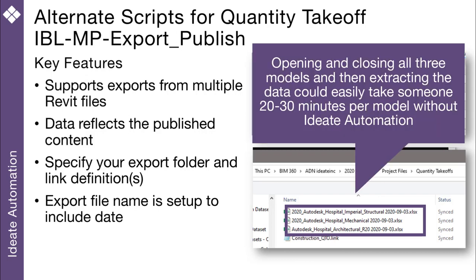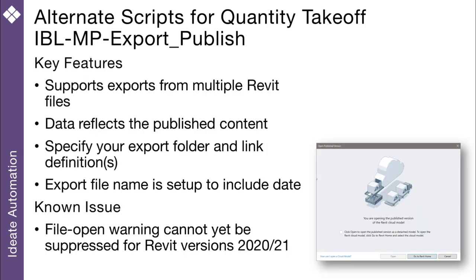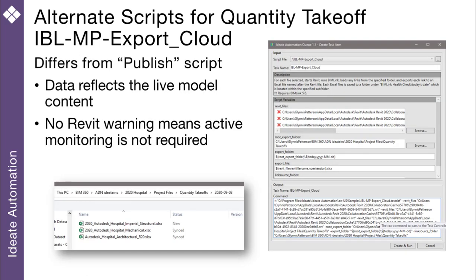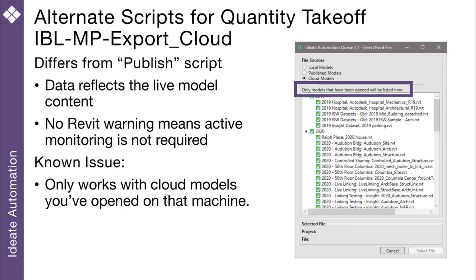Being able to work with multiple models means you can save lots of time with ID8 Automation. Opening cloud models by automation does have one disadvantage: the Revit file opening warning for versions 2021 and 2020 cannot yet be suppressed. If you prefer to use the live cloud models as your basis for a takeoff, we would recommend the script called IBL MP Export Cloud. This script differs from the published script in that it is designed to work with live cloud models and therefore does not display the Revit warning message. This script works with your cached local models, meaning those that have already been opened on your machine.